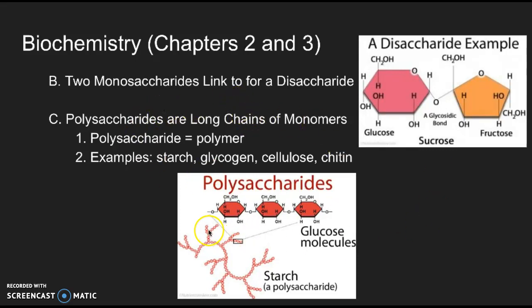Polysaccharides, as I mentioned before, are long chains of monomers. Examples are starch, glycogen, cellulose, and chitin. You'll see these in a lot of protective membranes and different organisms that we'll get into later.